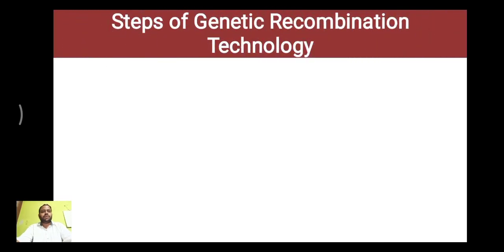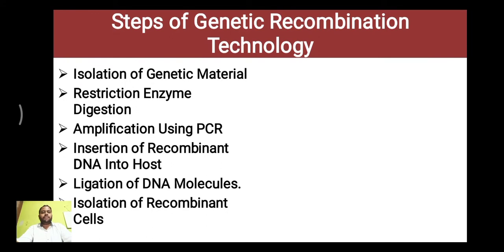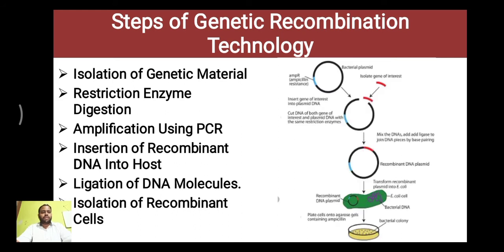Let's see the steps of recombinant DNA technology. First, we have to isolate the genetic material from the desired organism, then its restriction digestion is done, and the gene of interest in which the fragment is present is isolated using PCR. It is introduced into a vector and ligated, and introduced into a host cell. After expression, the isolation of recombinant cell is done. As shown in the figure, bacterial cloning is done, different gene is introduced in the bacteria, then it is allowed to produce expression and the recombinant cells are isolated.